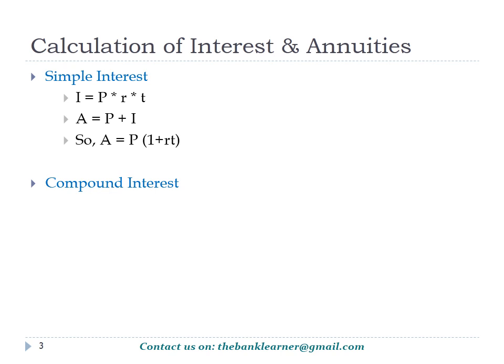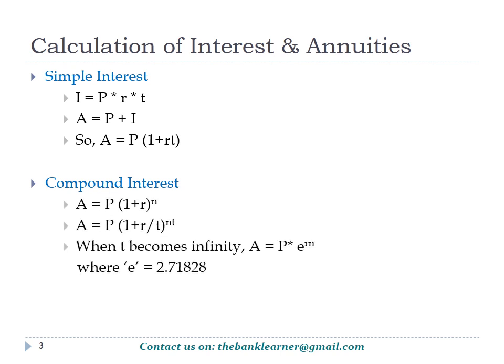If the interest is charged more than once during the period and the interest is reinvested, we need to compound the interest. If the interest is compounded annually, then the accumulated amount A = P × (1 + R)^n, where n is the number of years. If the interest is compounded T number of times per year, then A = P × (1 + R/T)^(n×T).